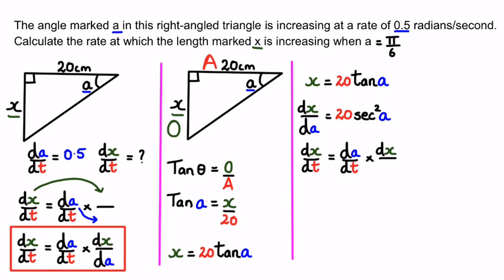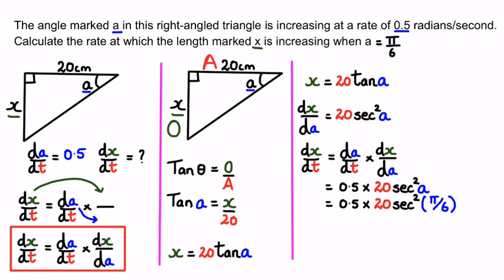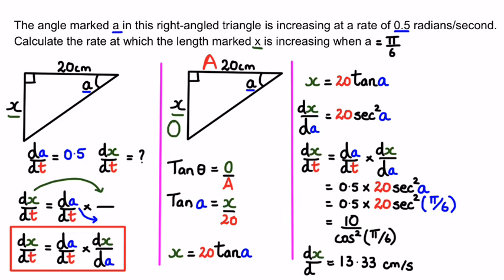Substituting back: dx/dt = da/dt × dx/da = 0.5 × 20 sec²(a). At a = π/6: dx/dt = 0.5 × 20 sec²(π/6). Since sec = 1/cos, this becomes 10 / cos²(π/6), which gives an answer of 13.33 centimeters per second.